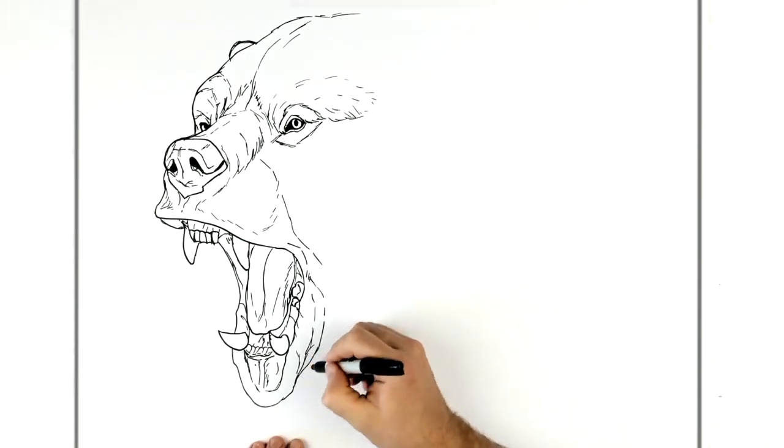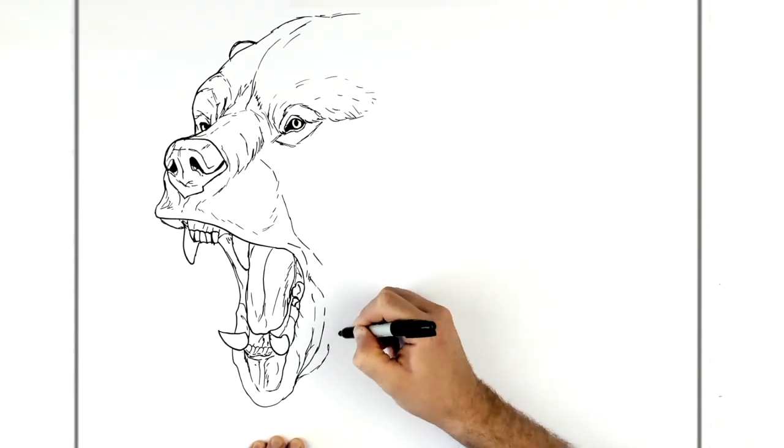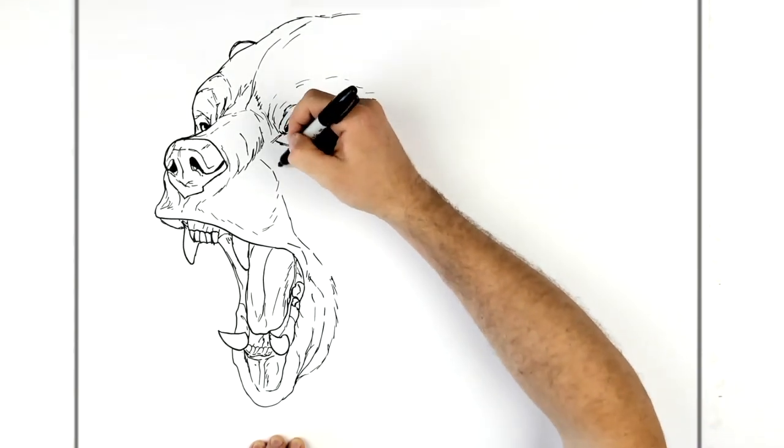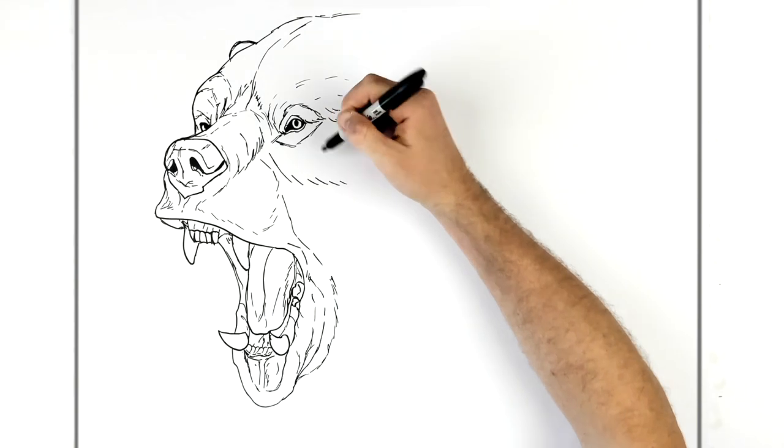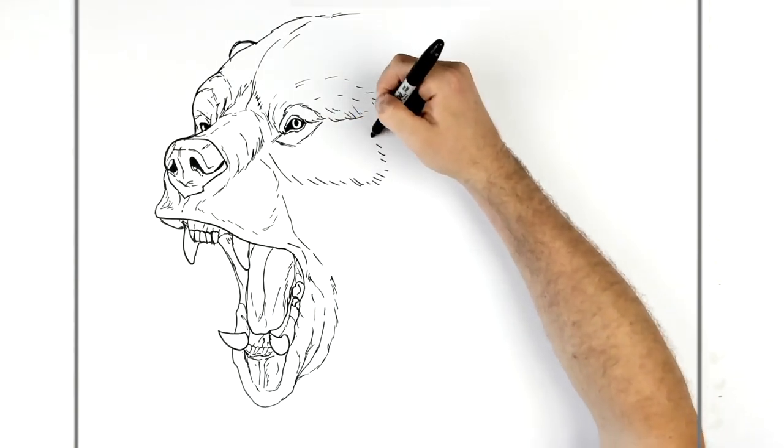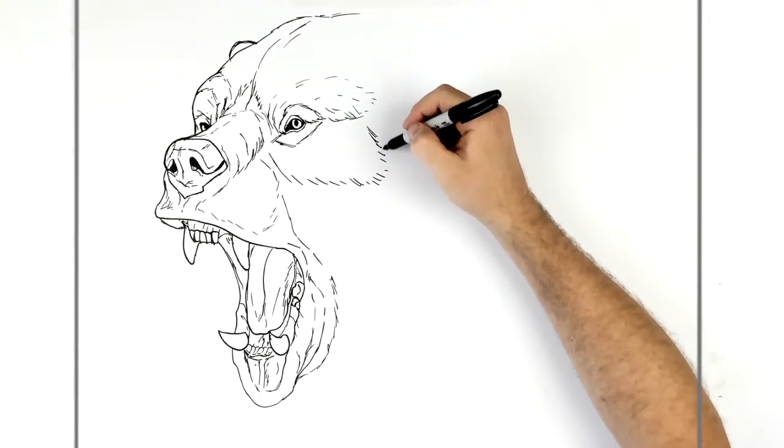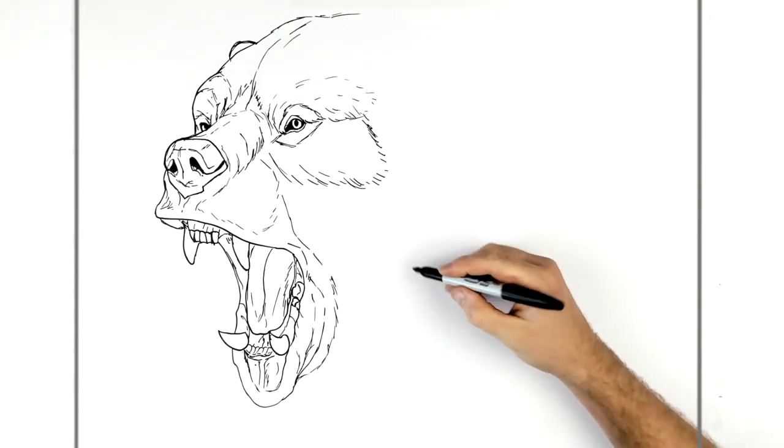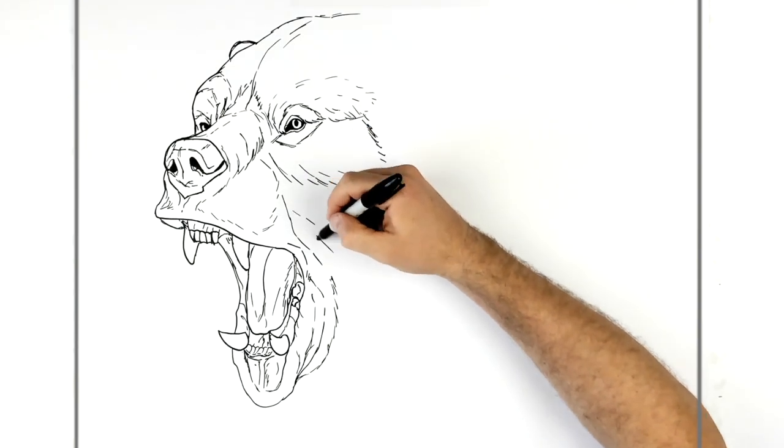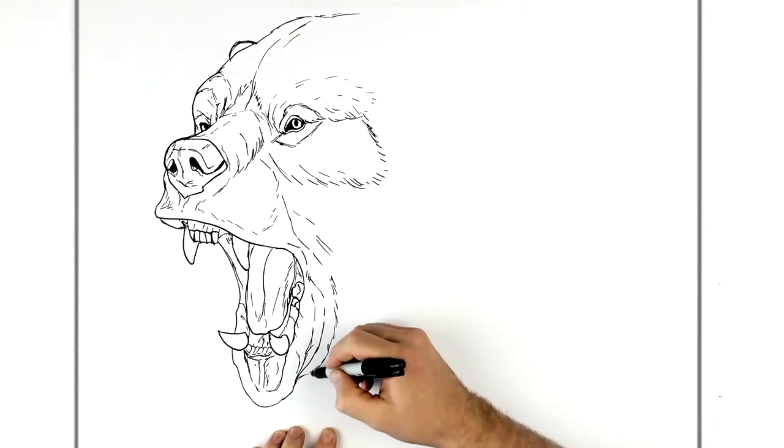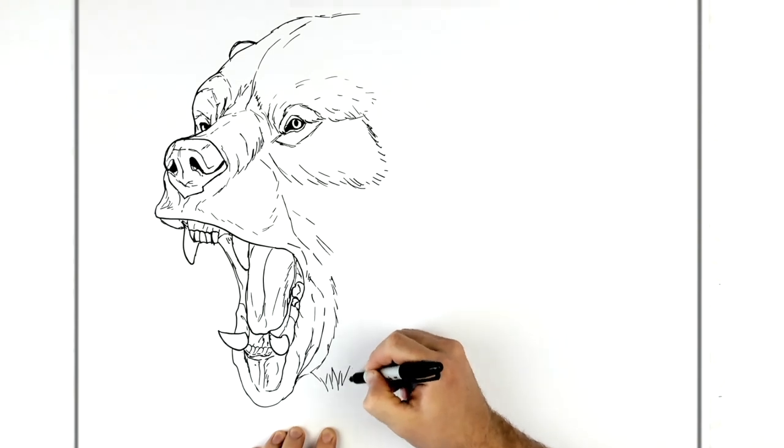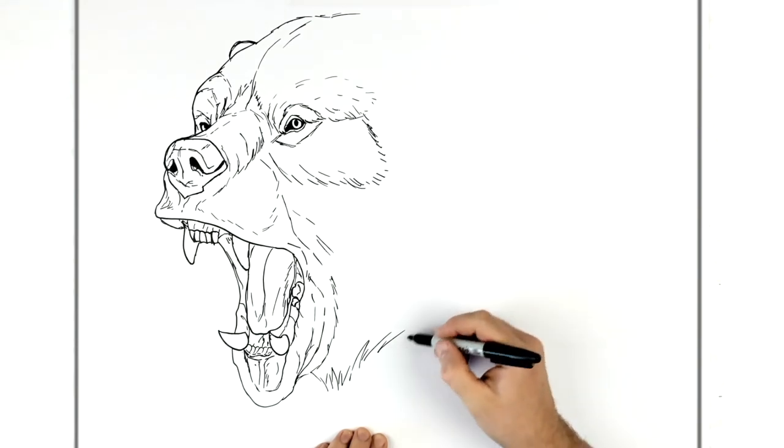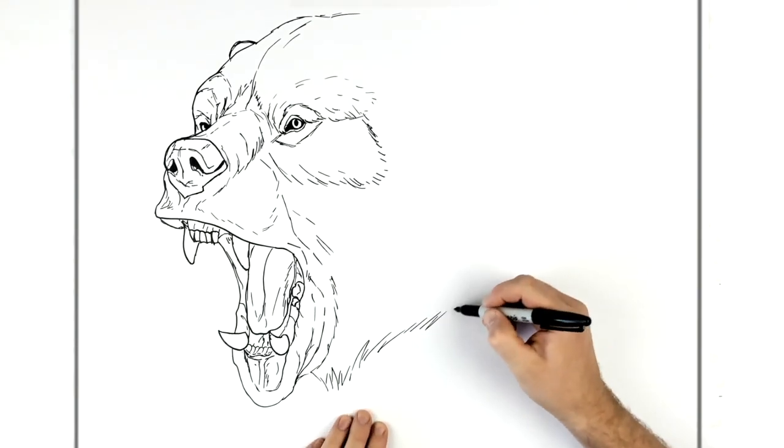Right, and then jaw, chin fur coming around here. And then he's got a big cheekbone, so he's got this big hairy cheekbone that comes around there. And more fur kind of coming down there, but we'll just get the edge of his face. He's got all this fur hanging off here.